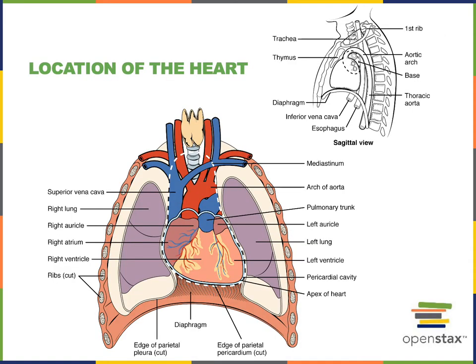The heart is found within the thoracic cavity, in the medial region of the thoracic cavity known as the mediastinum. You can see the white dashed line outlines the mediastinum in the illustration here. And the heart is found in the inferior part of the mediastinum.